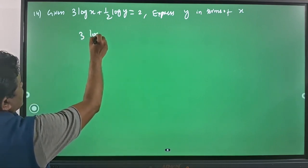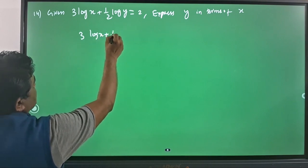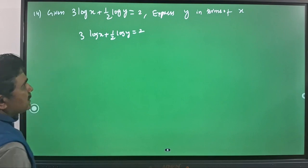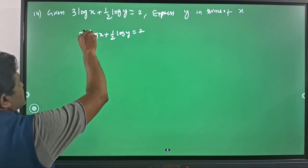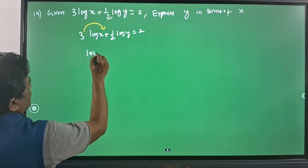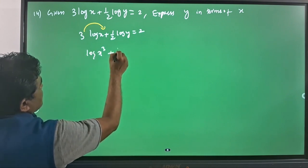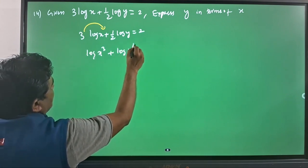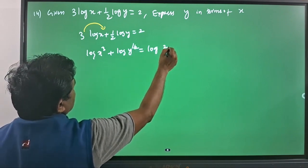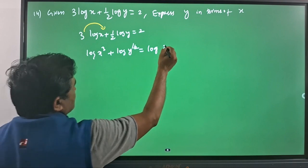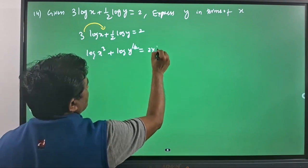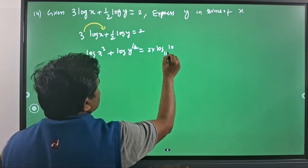I will write the given equation: 3 log x plus half log y equals 2. I am bringing these coefficients as the powers of the logarithm, so you will have log x³ plus log y^(1/2) equals, this I can write as log 2, this I can write as 2 log 10 with base 10.